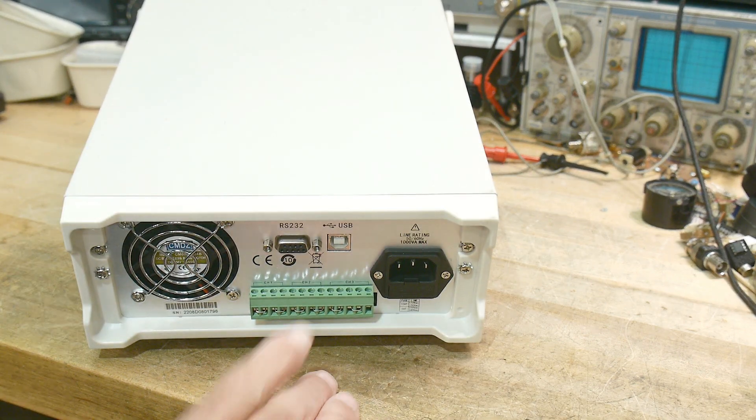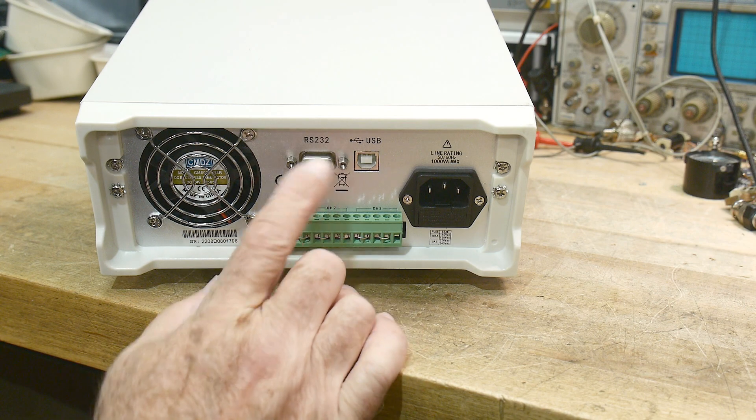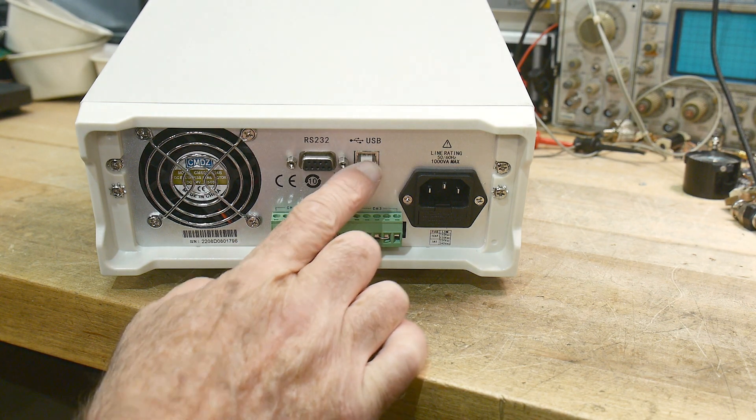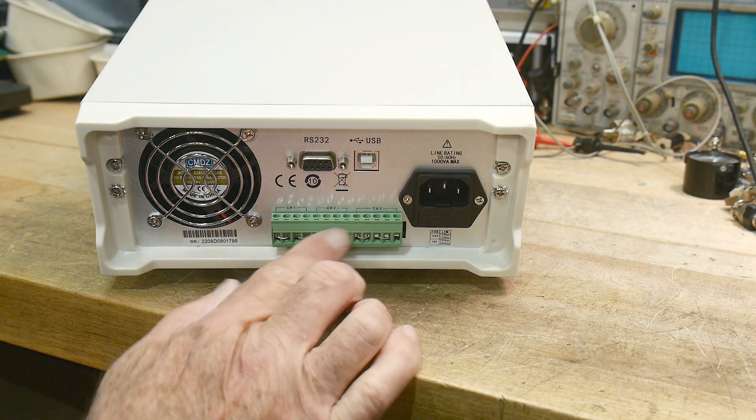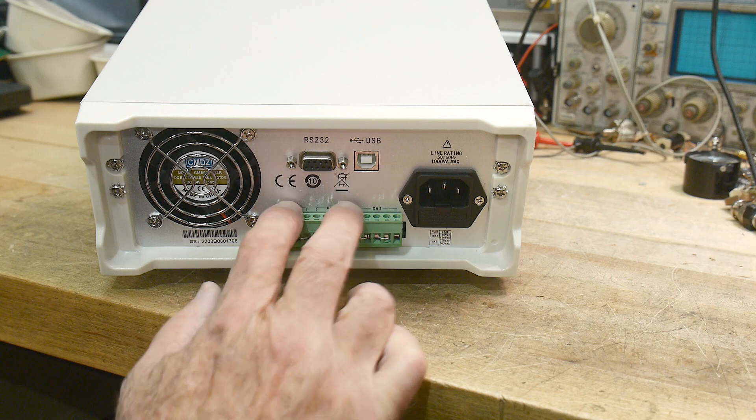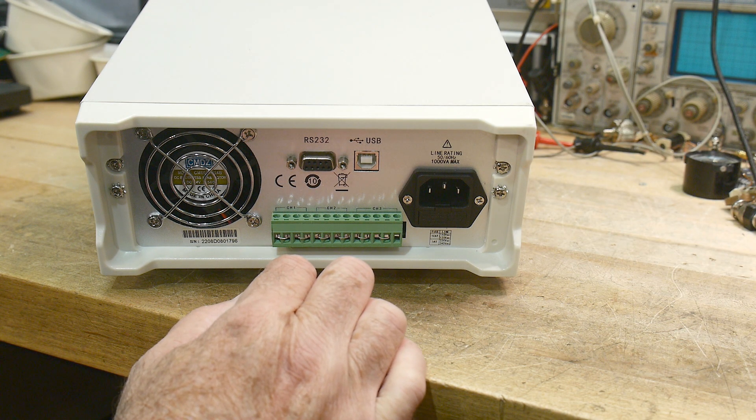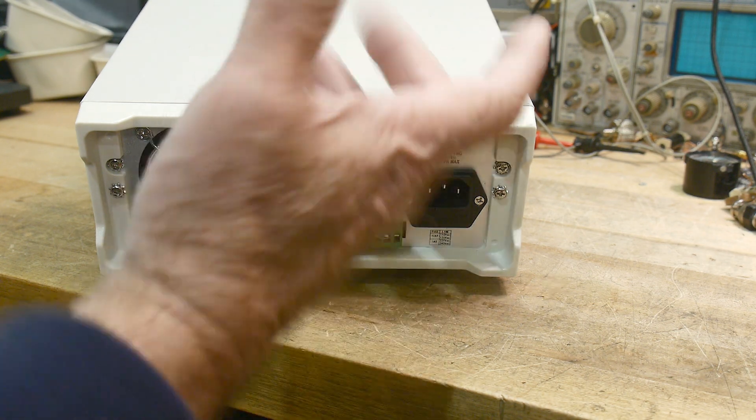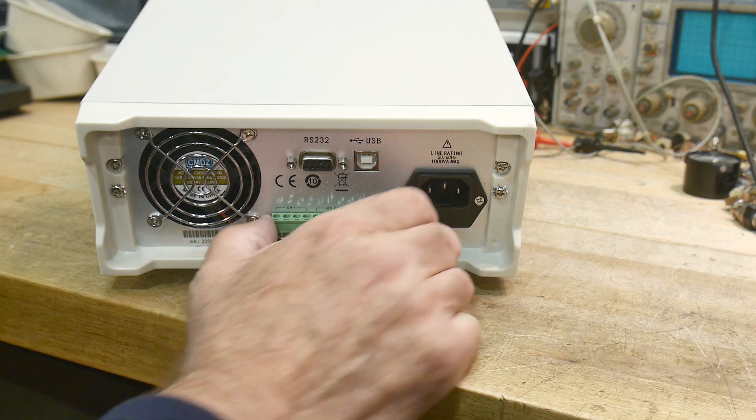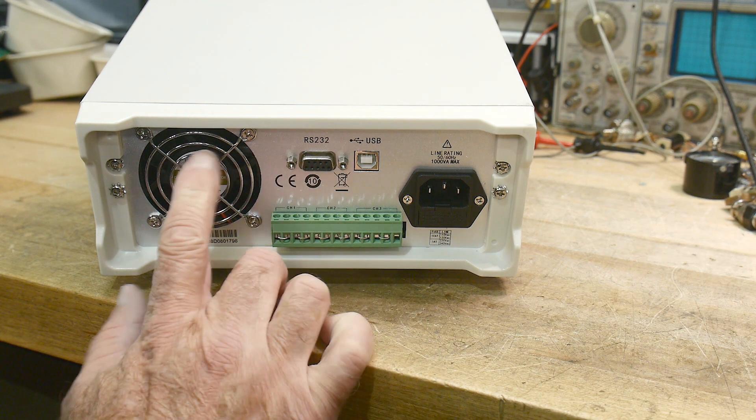It's programmable, so it has a USB connector and RS-232 connector, and then it has outputs on the back - channel 1, channel 2, channel 3 on the back and sense 1, sense 2, sense 3 on the back. That's nice if you want to make this a rack type of equipment, you can bring all your outputs out the back and you can program it from the back.